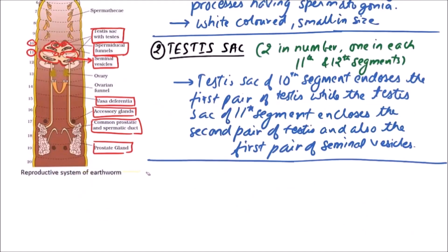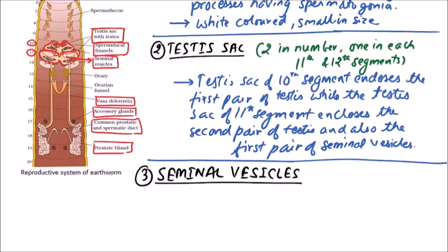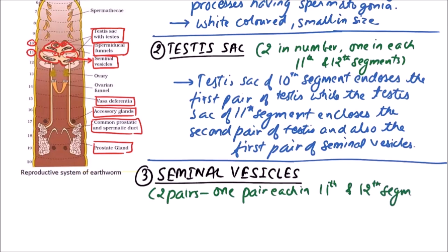The next structures related to reproduction are seminal vesicles. Seminal vesicles are two pairs, one pair each in the 11th and 12th segment.